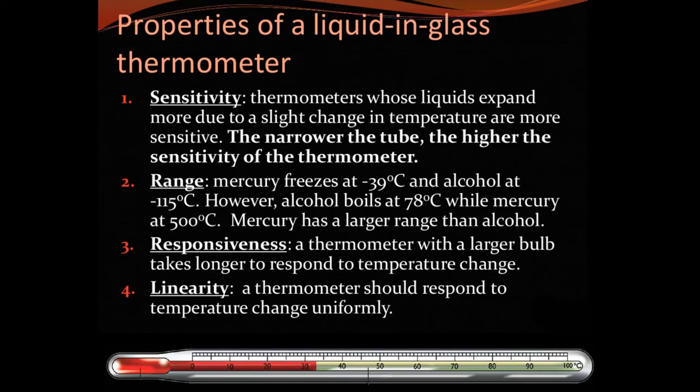Responsiveness. A thermometer with a larger bulb takes longer to respond to temperature changes. Similarly, what is linearity? A thermometer should respond to temperature change uniformly. It means the thickness of the thermometer where the mercury is there should remain same.